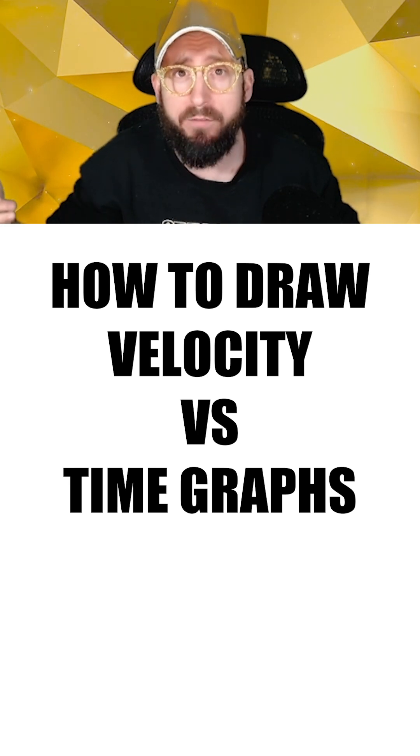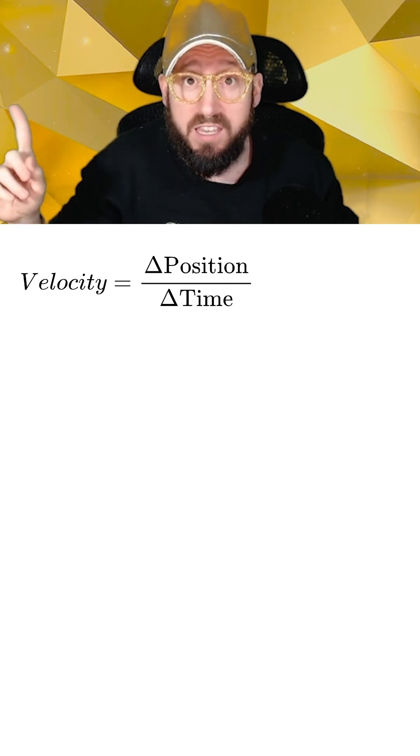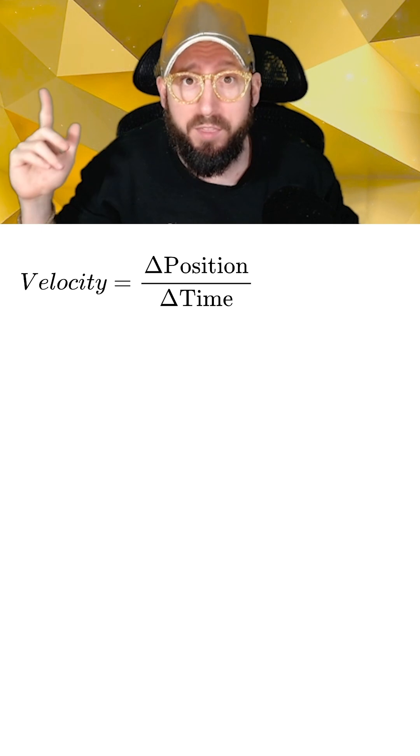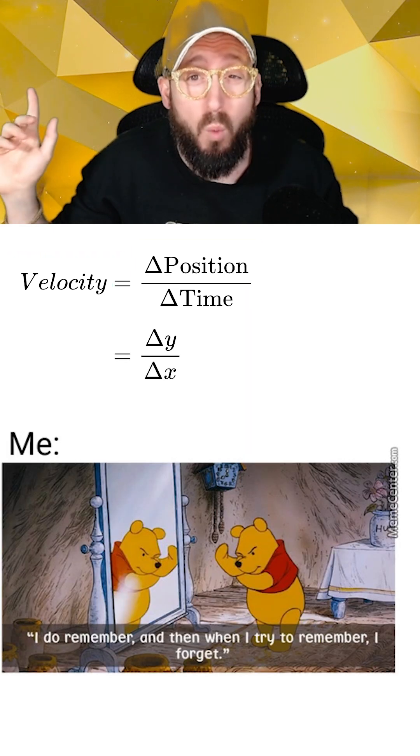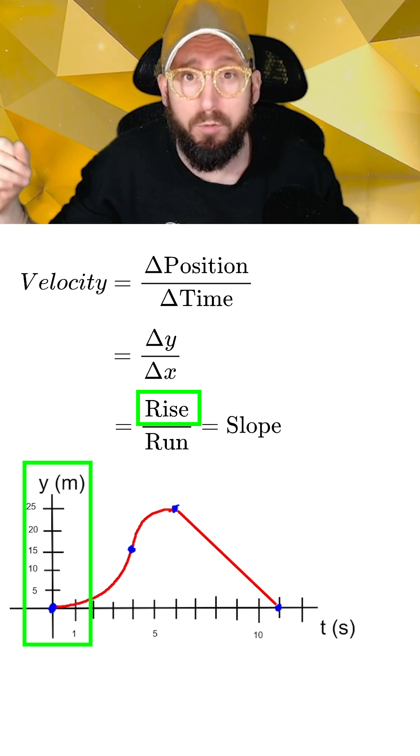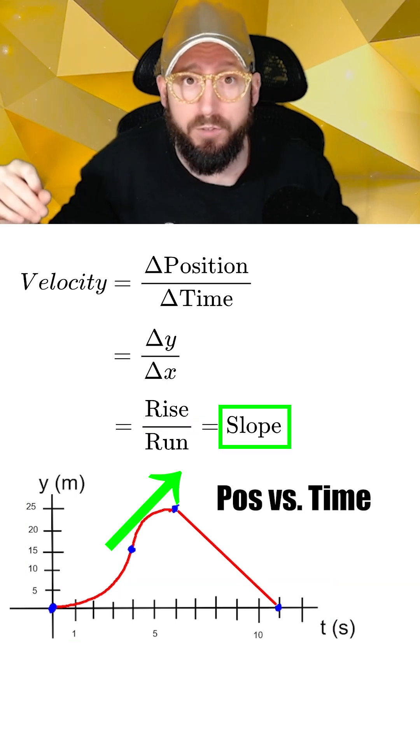Here's how to draw the velocity versus time graph from a position versus time graph. The key to drawing velocity graphs is to remember that the velocity is equal to the change in position over the change in time, which if we remember way back from early algebra is the rise over run, or the slope of a position versus time graph.